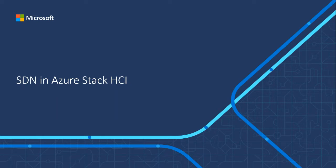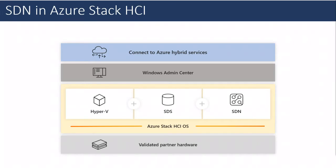Let me go through a quick overview of SDN and Azure Stack HCI, starting with the HCI structure. At the bottom is validated hardware from partners like Dell, Lenovo, HP, etc. On that hardware you install the HCI operating system, which includes platform features like Hyper-V, Storage Spaces Direct, and Software Defined Networking. HCI is best managed through Windows Admin Center, but you can also use PowerShell or System Center. SDN and its features are available with the default Azure Stack HCI operating system — no additional licenses needed.